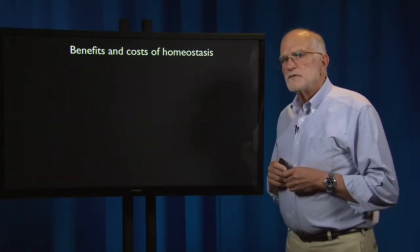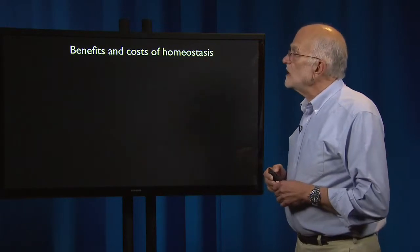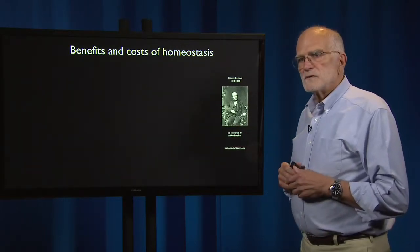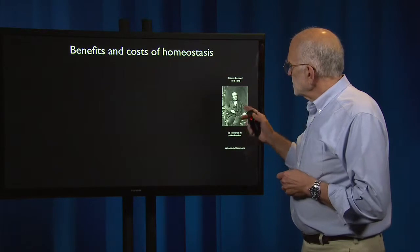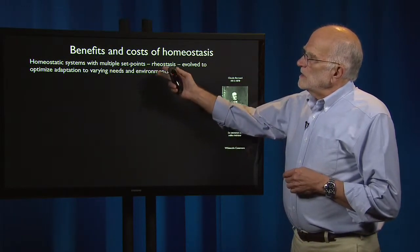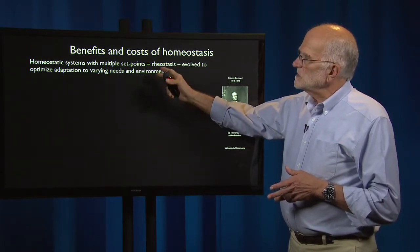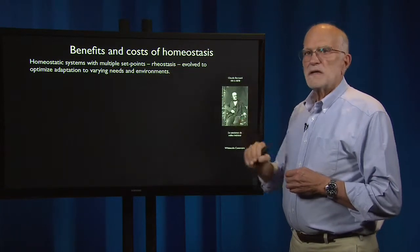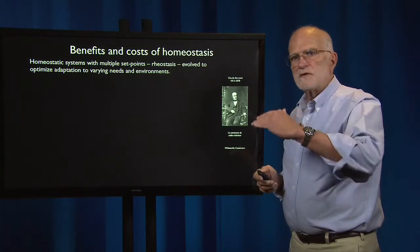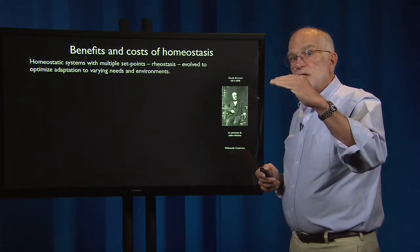Benefits and costs of homeostasis: homeostasis is overall a good thing — it keeps the internal environment constant — but the mechanisms that produce it contain vulnerabilities. The idea of la constance du milieu intérieur comes from Claude Bernard, the great 19th century French physiologist. Internal regulation is done with systems that have multiple set points, so they are rheostatic. They can be set to different levels of concentration and temperature, but those are also set points that can be broken.